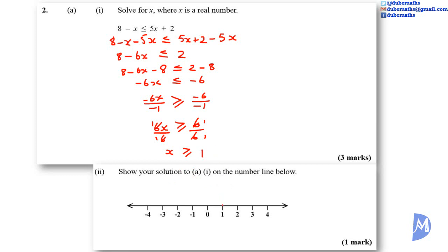So the values that X can take goes from 1 and above. Continues in this direction. And we shade the circle at 1 to show that 1 is included.